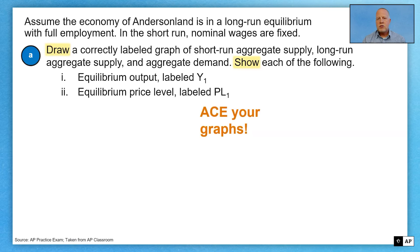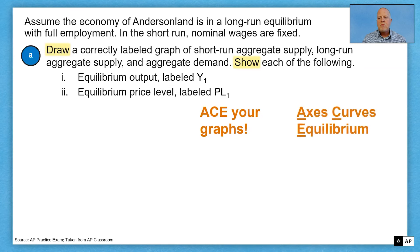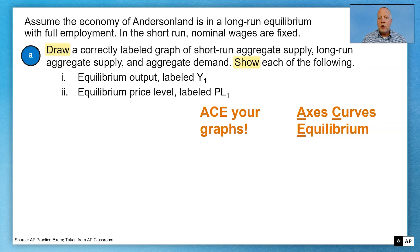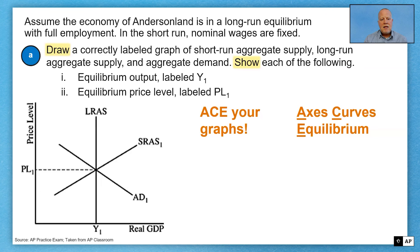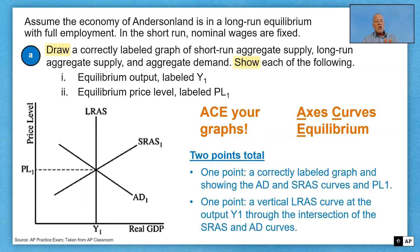When drawing a graph, ace your graphs. ACE means make sure you identify your axes, your curves, and your equilibrium. If you do that every time, you will earn points. Here's what our graph ought to look like: we should have price level and real GDP on our axes, and AD, SRAS, and LRAS all accurately identified. They should be intersecting at the same point because our initial prompt said we're at long-run equilibrium, which means full employment of output. So we have Y1 and PL1 right there — two points total. The second point is placing LRAS in the correct position to show where full employment output is.